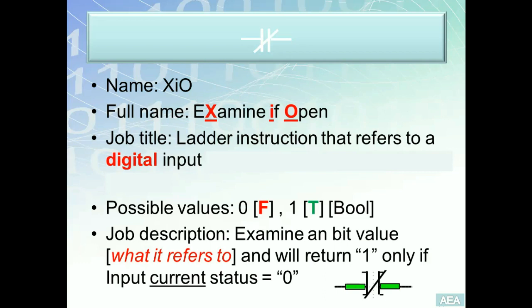Let's see this example to illustrate this concept. We have an XIO to the left that's tied to terminal number seven, as you can see from the address, and we have an XIO to the right tied to address number two.